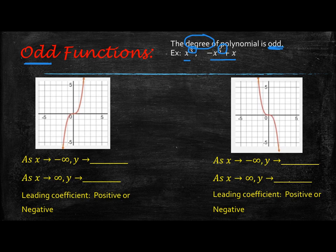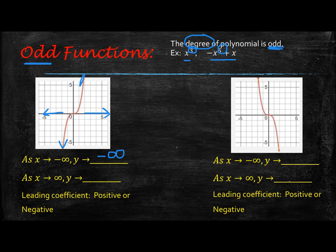Actually, these graphs are cubic functions, and we'll learn that here pretty soon. But we're just stating what's happening to the ends. So as x approaches negative infinity, the y value approaches negative infinity as well. But on the right side, as x approaches positive infinity, y approaches positive infinity as well. Something you'll notice about odd functions: the left and the right side are going to be going in opposite directions.